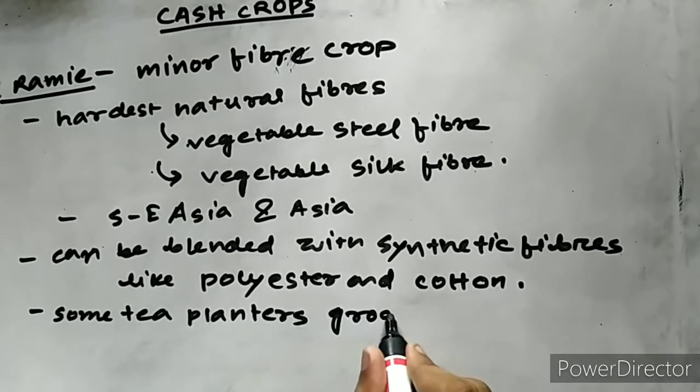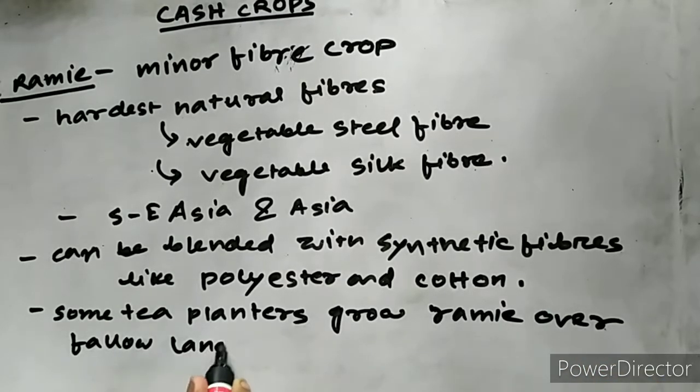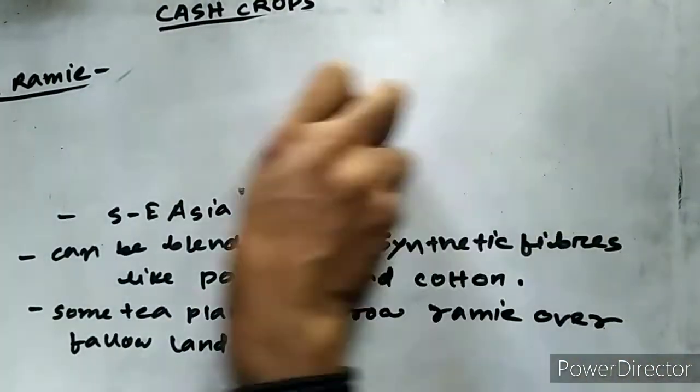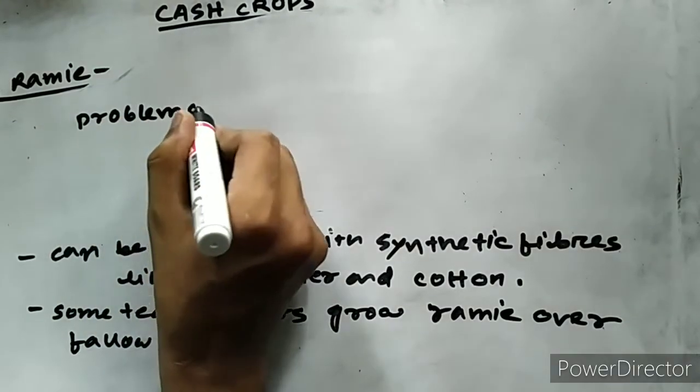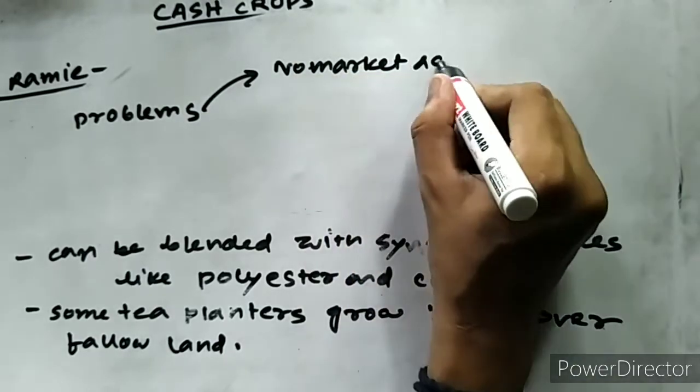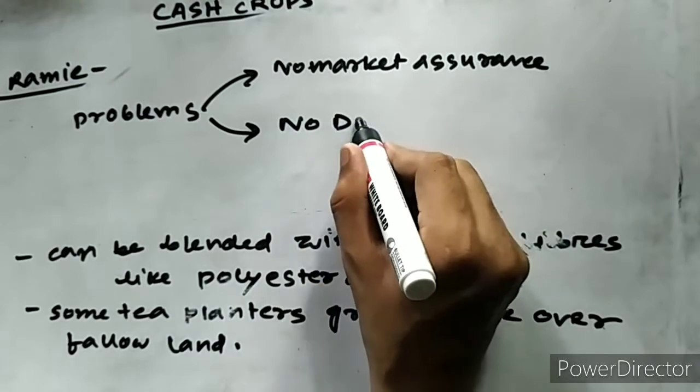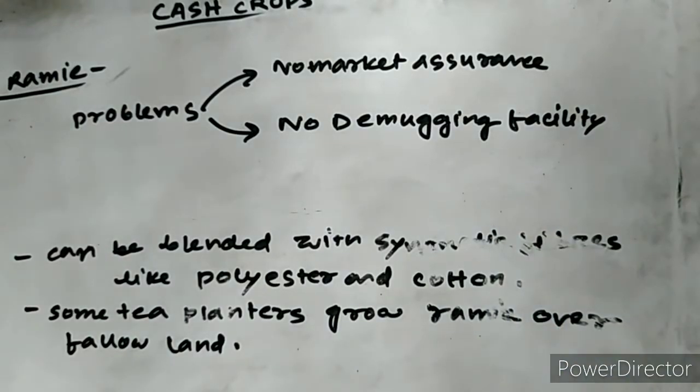However, this ramie crop is having too much problem because farmers face loss after its production. The problems associated with ramie production can be discussed as the lack of an assured market, and lack of modern decorticating facility. Decorticating is simply the process of extracting the fiber after harvesting.